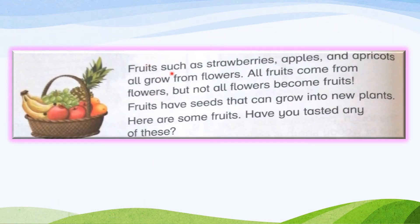Fruits such as strawberries, apples, and apricots all grow from flowers. All fruits come from flowers, but not all flowers become fruits. This is the key point: all fruits come from flowers, but not all flowers become fruits.